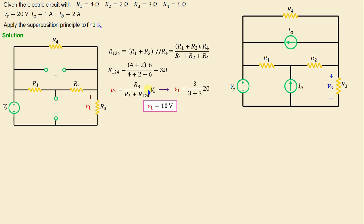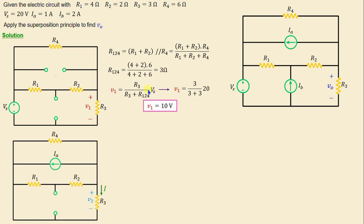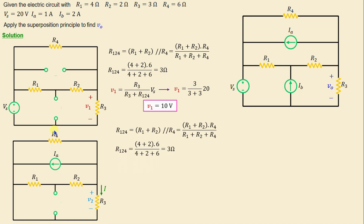Now let's consider the independent current source Ia active, with the independent voltage source Vs inactive — replaced by a short circuit — and the independent current source Ib inactive — replaced by an open circuit.